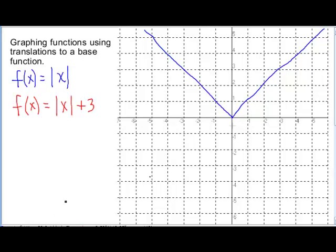The first translation I'm doing is we are adding a number to the end of the function, so the number we're adding is outside the absolute value. When we add a number to a function like this it's going to cause the graph to shift up, in this case by 3 units. If I subtracted the number, if I subtracted 3 we would move down.